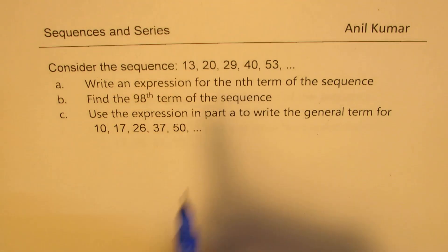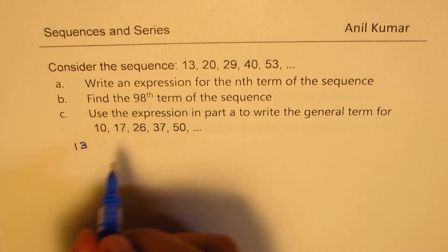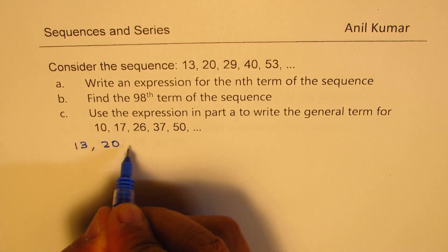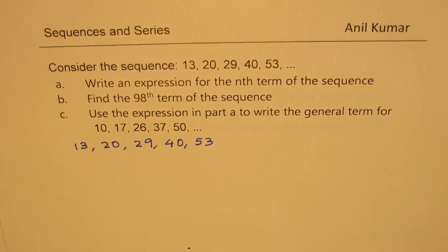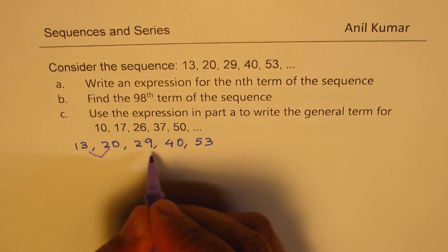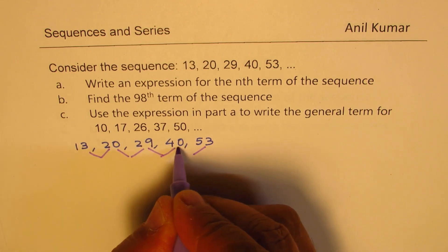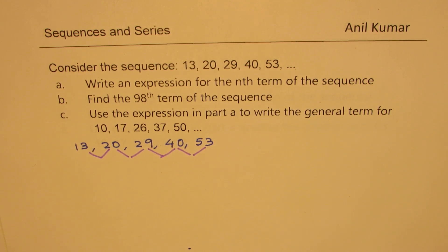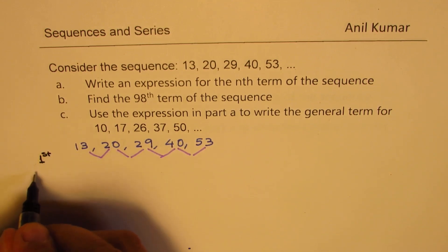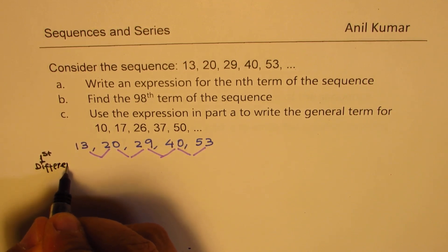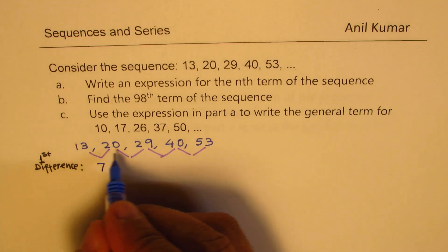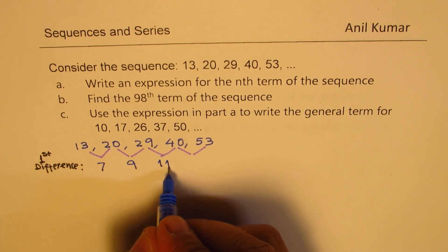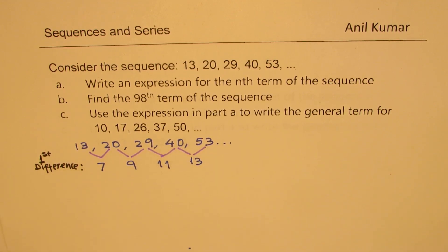To analyze this sequence, let's find the first difference. We have the terms 13, 20, 29, 40, and 53. The first differences are: 20 minus 13, 29 minus 20, 40 minus 29, and 53 minus 40. So the first differences are 7, 9, 11, and 13. We see that the first difference is not constant, so it's not linear.